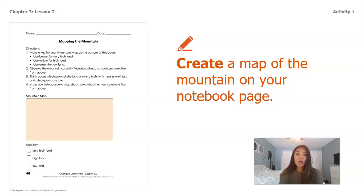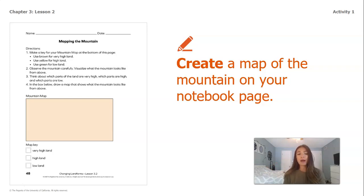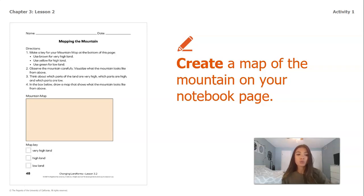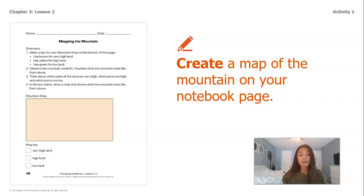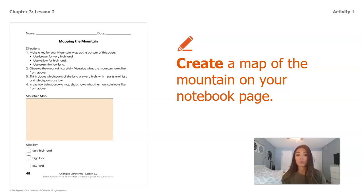Now that you've colored in your map key, you're going to create a map of the mountain on your page. Remember that a map is different from just a photograph — our map is not going to focus so much on showing the shape of a mountain, but it's going to focus more on using those colors from our map key to show where the high land is, where the lower land is, and where the very high parts of land are. Go ahead and pause this video, take a second to work on drawing your map in your worksheet, and then we will come back and talk about our second activity.